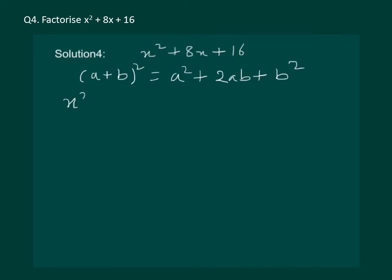We write x square plus 8x plus 16 as x whole square plus 4 whole square. That means we have a as x and b as 4. Now, let us try to find out 2ab. If that 2ab is same as 8x, then half the work is done.